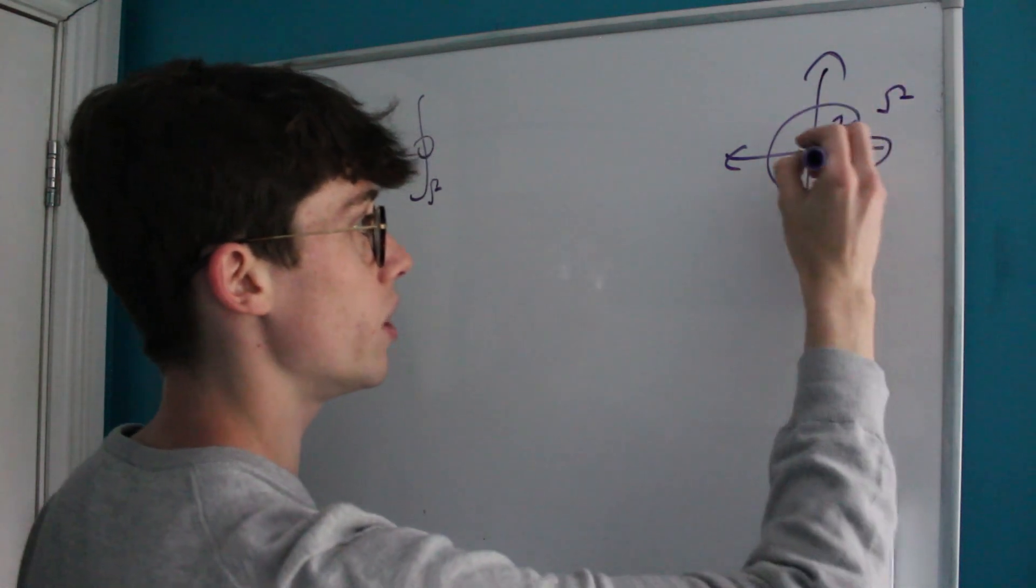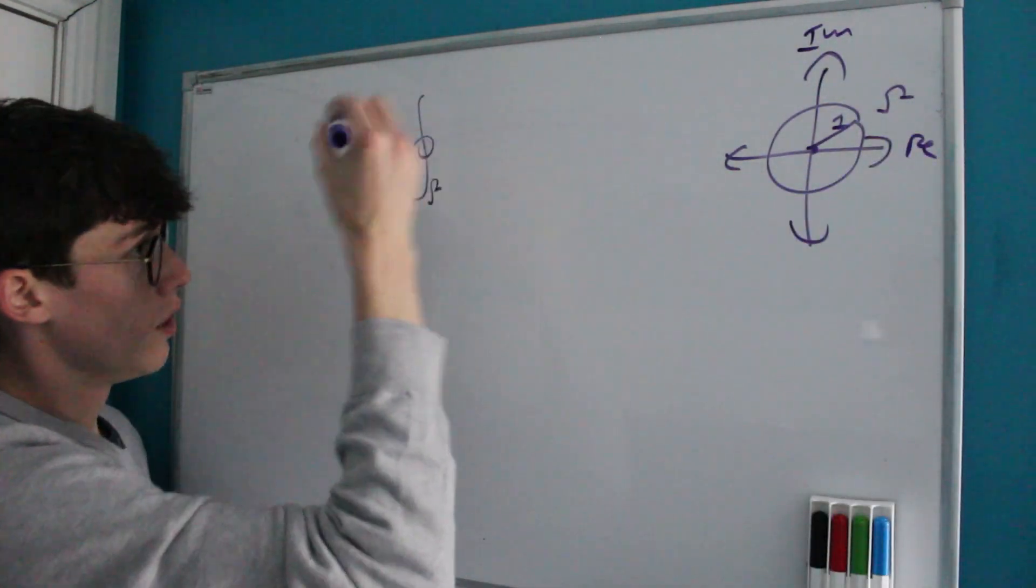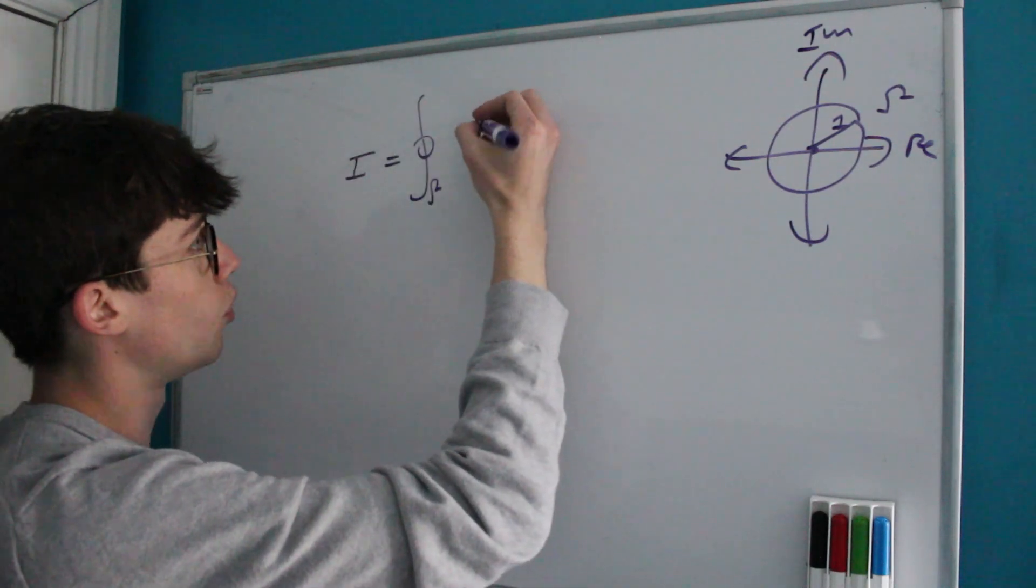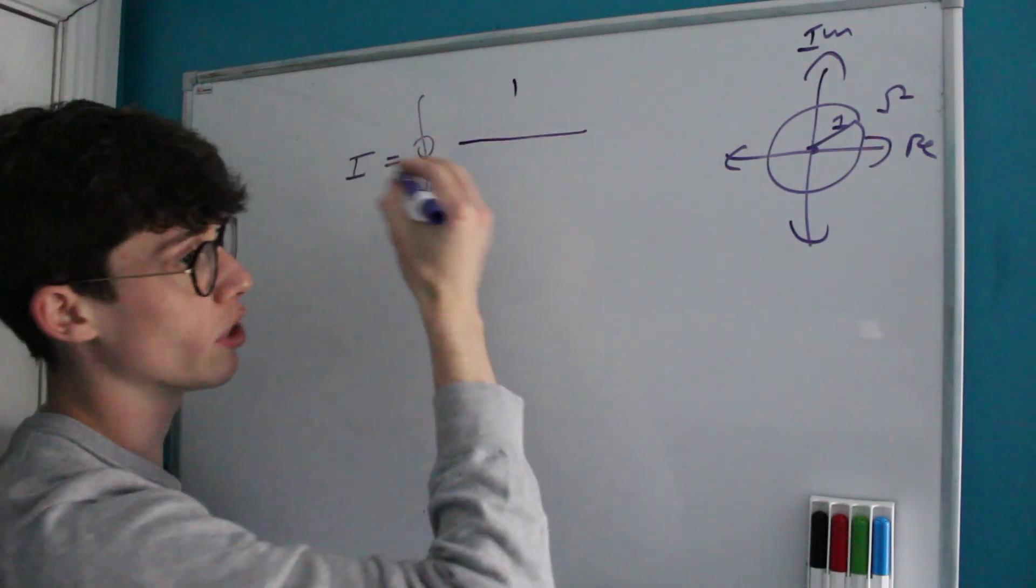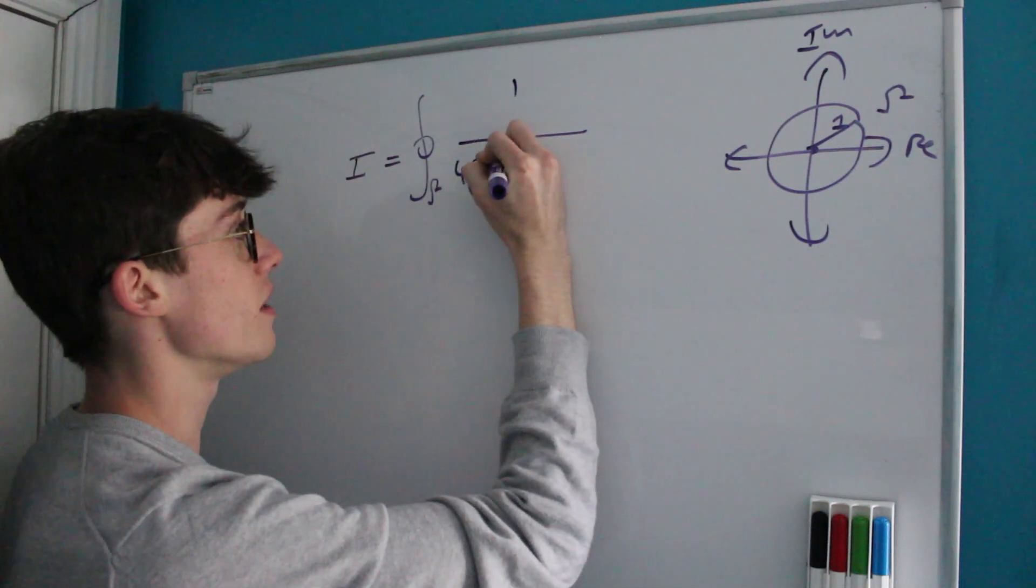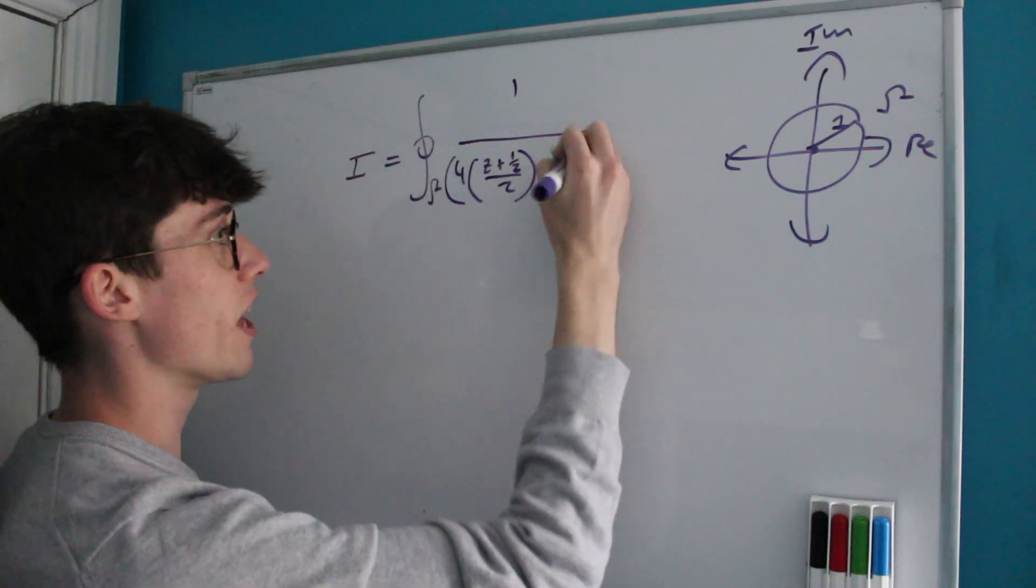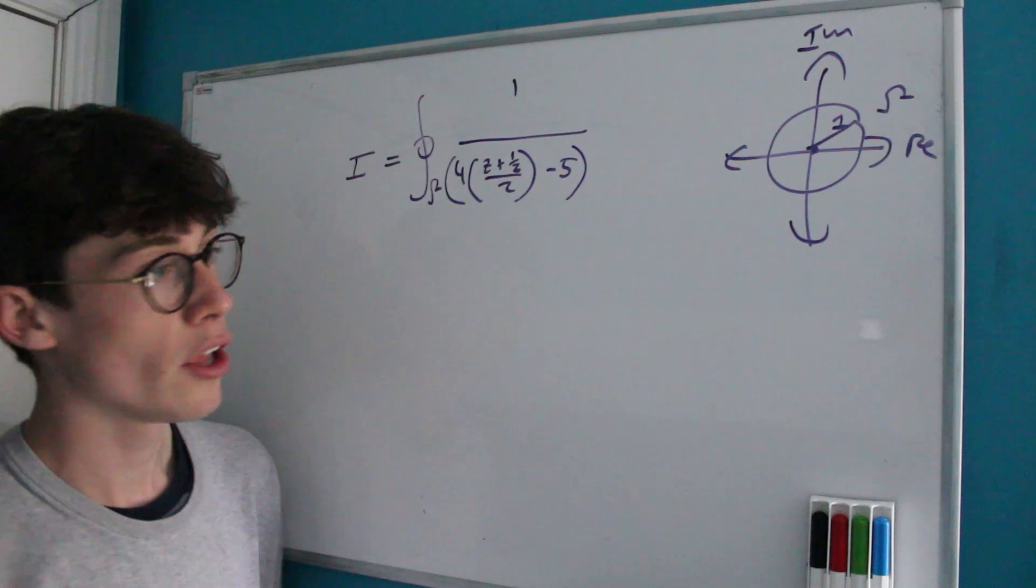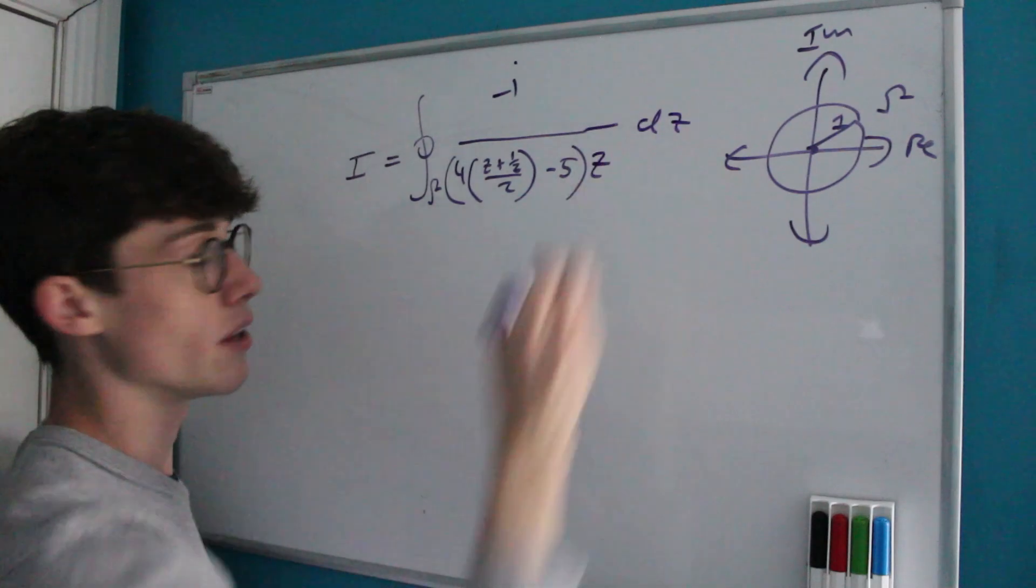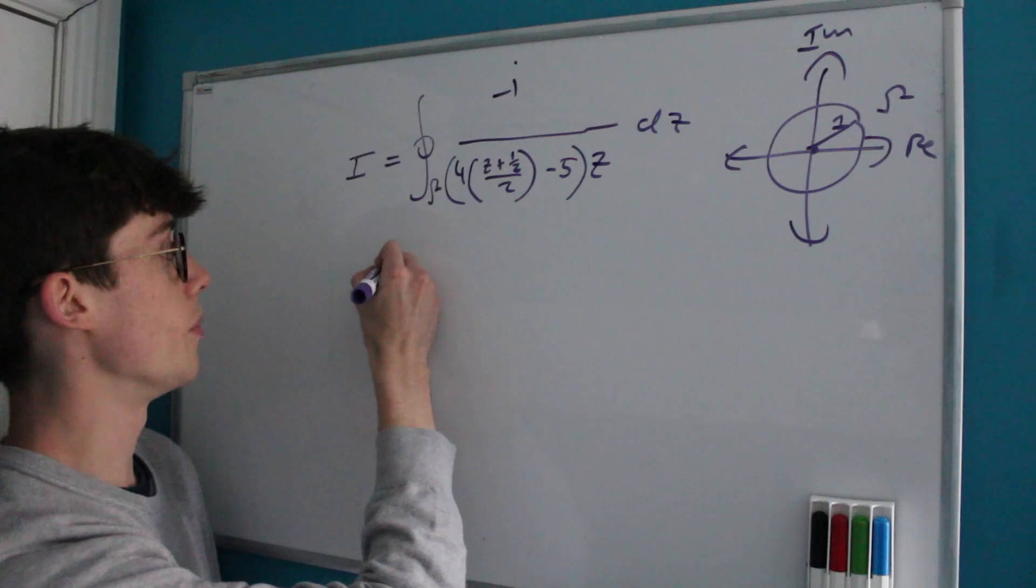And of course this radius is 1, and this is the origin, this is our imaginary and real axis. So we're integrating around gamma and our function was 1 divided by 4 times cosθ minus 5, but of course that's going to be 4 times z plus 1 over z over 2 minus 5. And don't forget that we have to swap our dθ for negative i over z times dz. So this is our new contour integral that we have to solve.